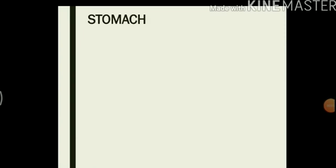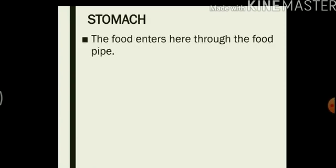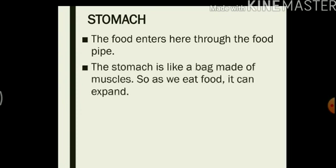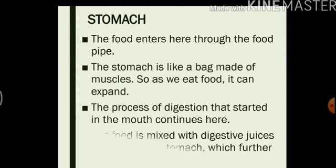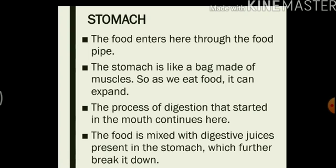Next we have the stomach. The food enters here through the food pipe. The stomach is like a bag made of muscles, so as we eat it can expand. You must have noticed sometimes that when you eat a little bit of extra food your stomach feels full and bloated. This is because the stomach expands to accommodate the food that you are eating, and as your food gets digested the stomach goes back to its normal size. The process of digestion that started in the mouth continues here. The food is mixed with digestive juices present in the stomach which further break down the food.